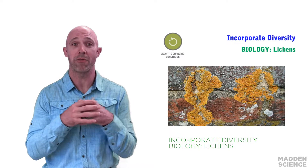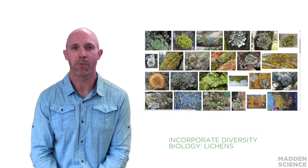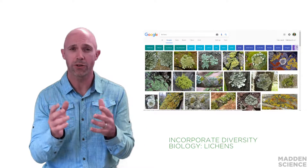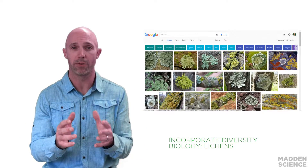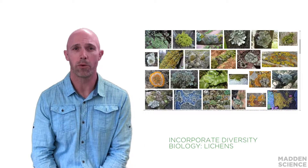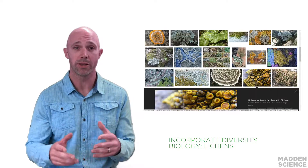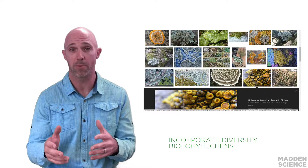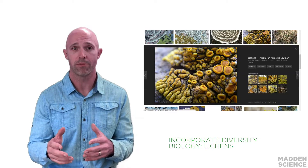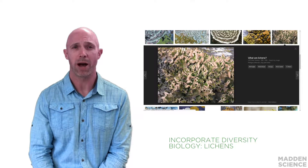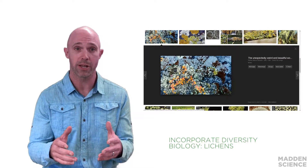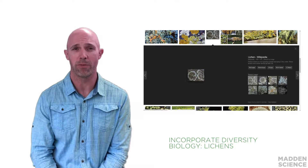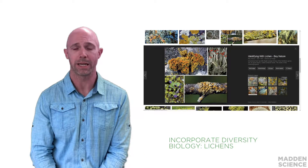Lichens are perhaps my favorite organisms — they're a wonderful splash of life and unexpected color. Lichens are also a shining biology example of the life's principle: incorporate diversity. Lichens are a mutualistic symbiotic organism consisting of algae and/or cyanobacteria, and fungi — often more than one species. The composite organism is a wonderful representation of biodiversity, as it is made up of not just more than one species, but also more than one kingdom.